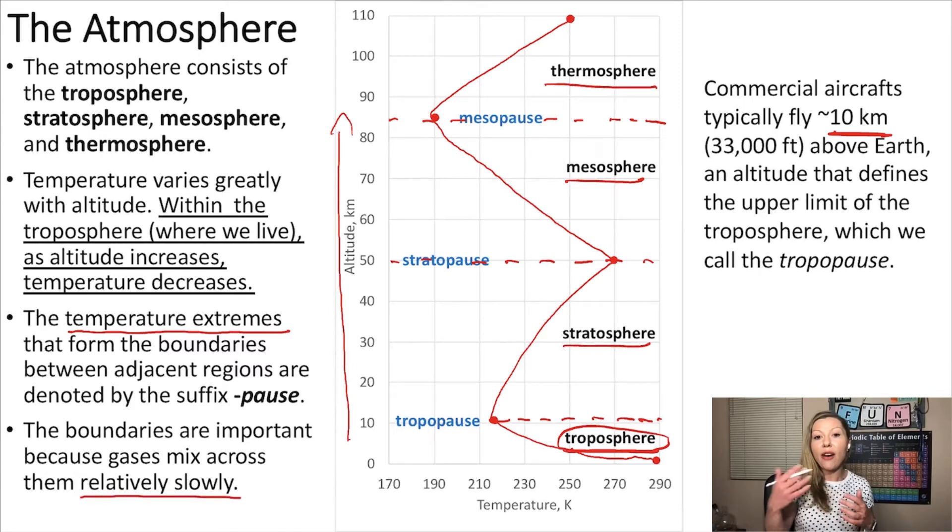These boundaries are important because gases mix across them extremely slowly. When we have pollutants in the troposphere, they will move into the stratosphere very slowly.